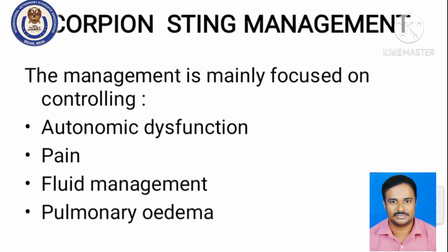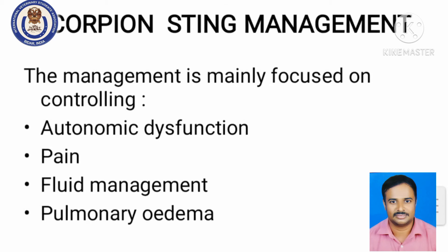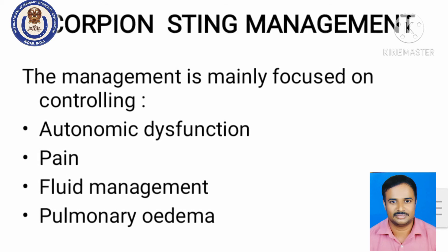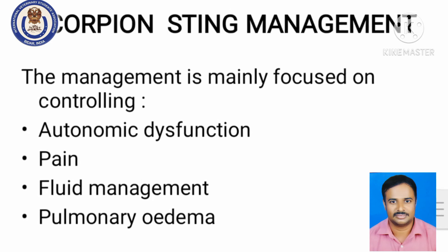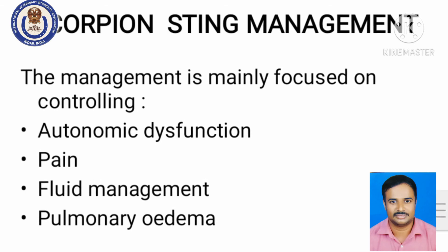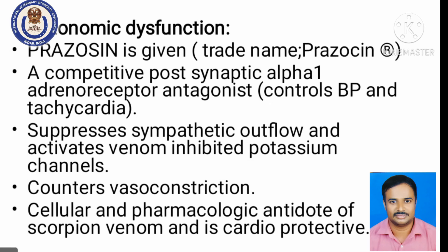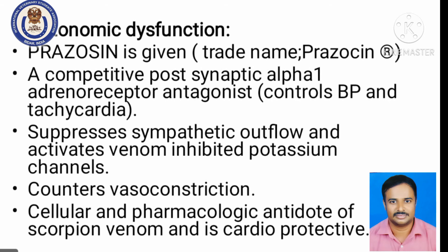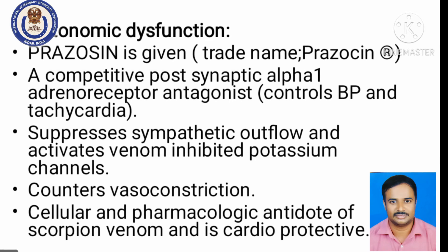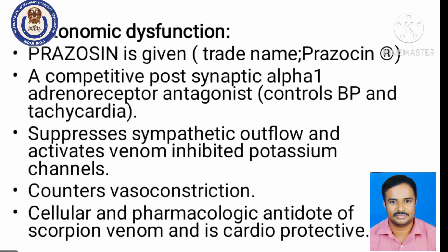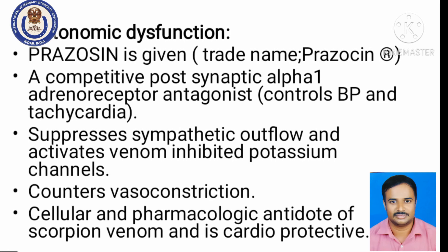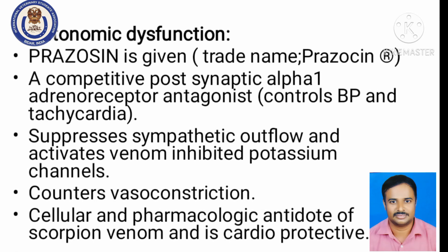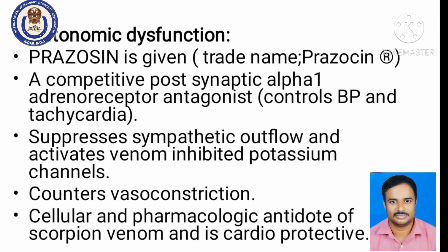Management of scorpion toxicity involves mainly controlling autonomic dysfunction. There will be intense pain at the sting site. Fluid management is very important, as is management of pulmonary edema. Autonomic dysfunction is controlled using prazosin — an alpha-1 adrenoreceptor antagonist which controls blood pressure and tachycardia, and counteracts vasoconstriction induced by scorpion toxin. Prazosin can be used as an antidote-like treatment in scorpion poisoning. It is available as tablets of 1 mg, 2.5 mg, or 5 mg. The dosage is around 30 mcg/kg body weight.